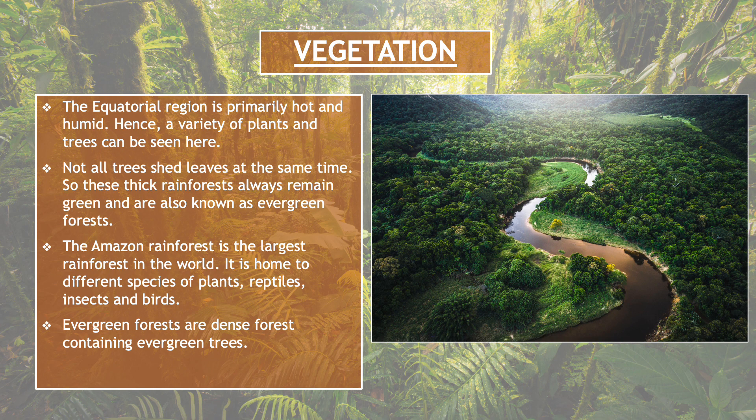The Amazon rainforest is the largest rainforest in the world. It is home to different species of plants, reptiles, insects and birds. Amazon rainforest दुनिया का सबसे बड़ा rainforest माना जाता है, और यहाँ पर अनेकों प्रजाति के plants, reptiles, birds और insects पाए जाते हैं. Evergreen forests are dense forests containing evergreen trees — बहुत घने होते हैं.